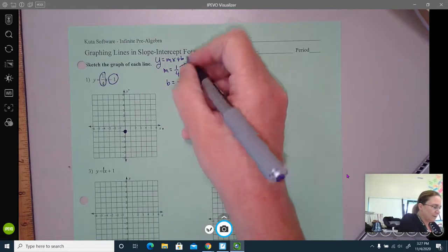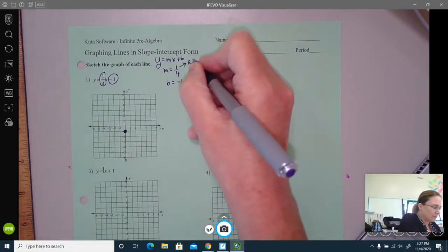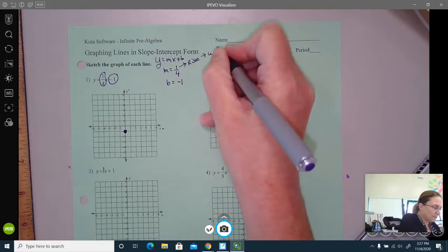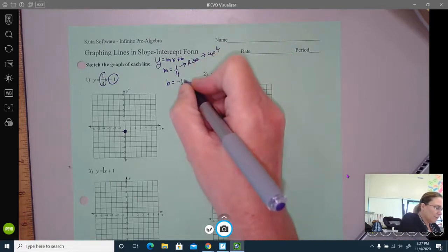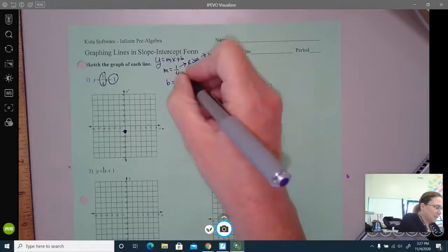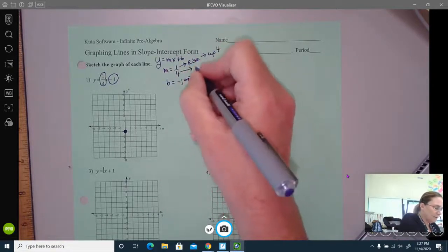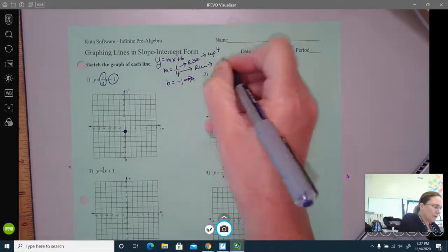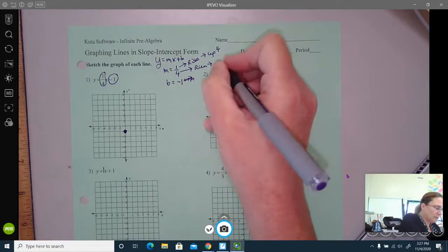So that means up four. My run, I'm sorry, oops, that's my y-intercept. My run is four. So my run is always four, to the right. So this is four right.